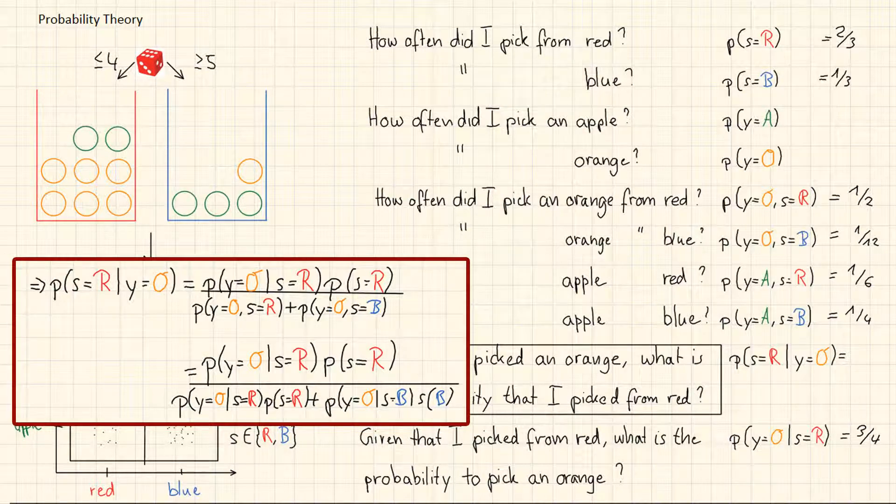And we can use the expression of p of y equal orange given s is equal to b times s equal b. But we don't have to apply the product rule. We can also use the formula directly above. And we can just plug in p of y equal orange and s is equal to blue. We already calculated that. This is then 1 over 12.